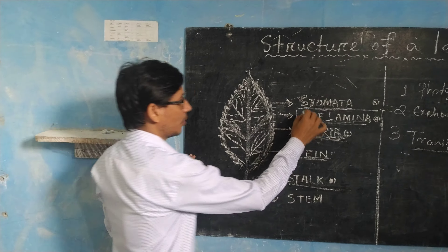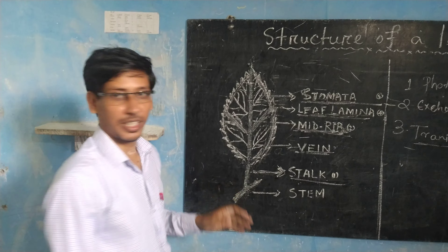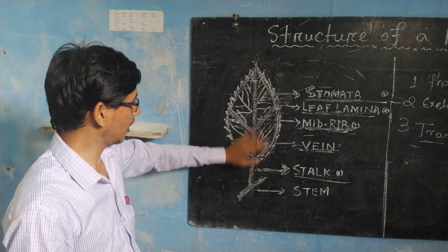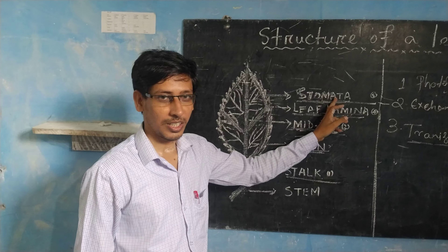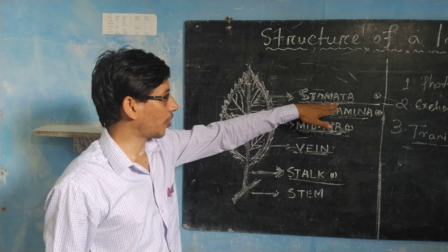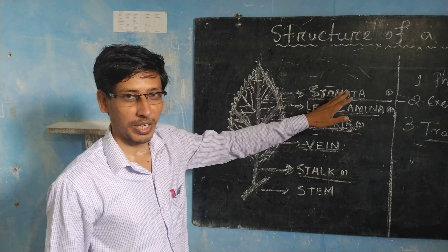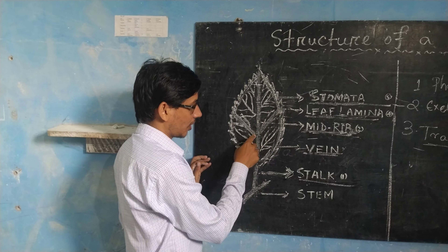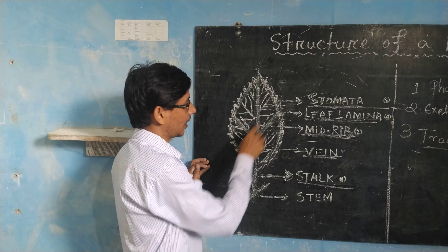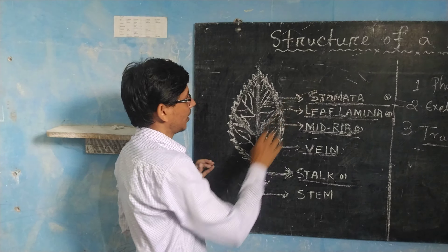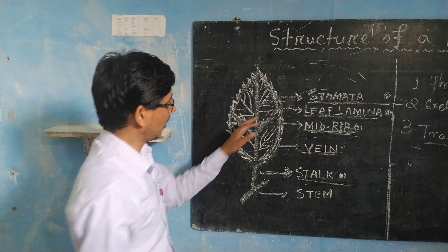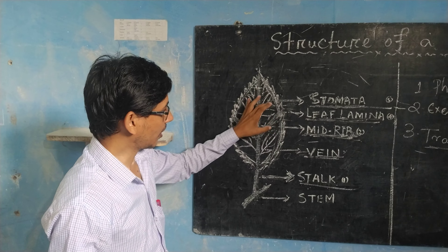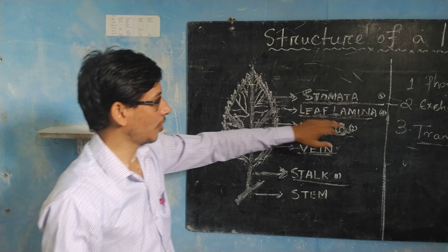The next part is the stomata. Stomata are tiny or small pores present on the upper surface and lower surface of the leaf. The function of stomata is the exchange of gases — the leaf absorbs carbon dioxide from the air and releases oxygen into the air. This is called the exchange of gases. Also, water vapor is released into the air through the stomata, and this process is called transpiration.